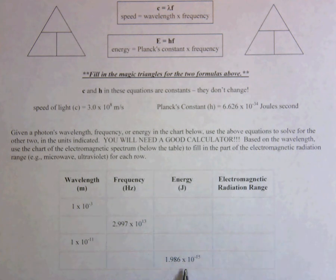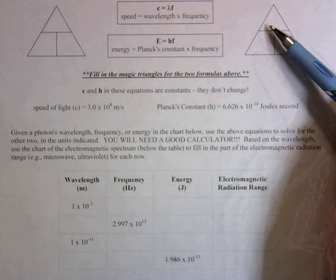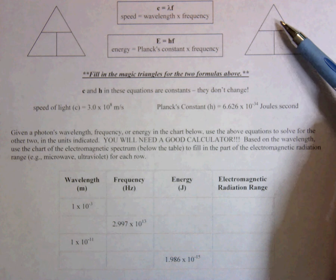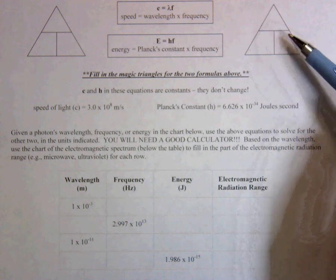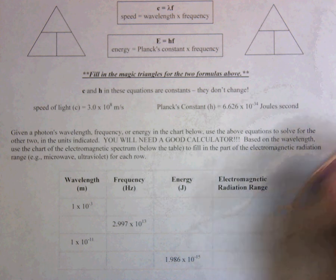Here you're going to have to work backward. You have energy, and you need to solve for frequency. So again, use your magic triangle here, and you're going to be solving for frequency. So just cover up frequency, and that'll show you what to do with the other two numbers, which will be your energy and Planck's constant.